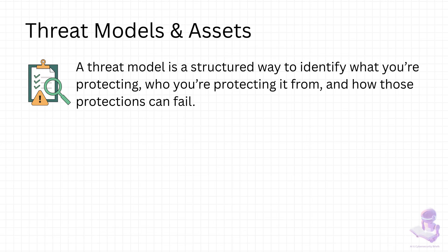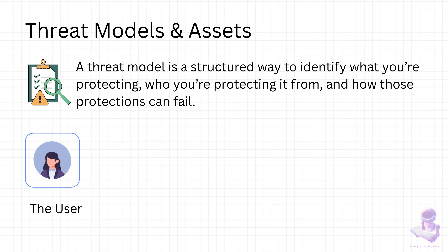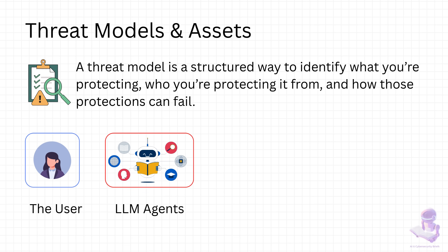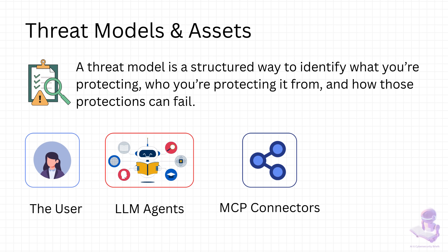In the MCP world, there are four broad categories of assets to think about. First, the user — the person interacting with the system. Their identity, their intent, and their trust are all on the line. If attackers can spoof or mislead the user, the whole chain breaks down. Second, the LLM agent itself — this is the brain interpreting instructions. It can be manipulated, tricked, or forced into actions it wasn't meant to perform. Third, the MCP connectors — these are the bridges into real systems. If compromised, they can open the floodgates, exposing sensitive functions or data.